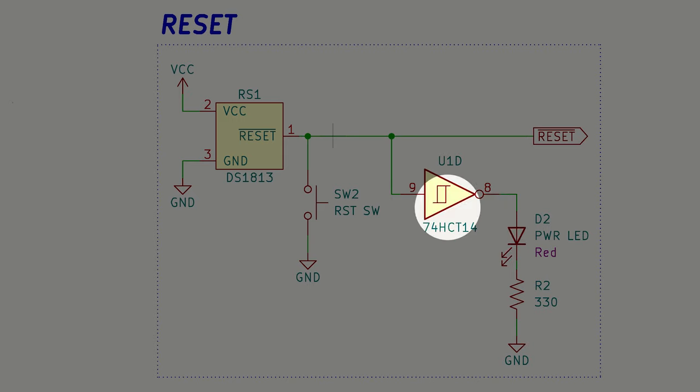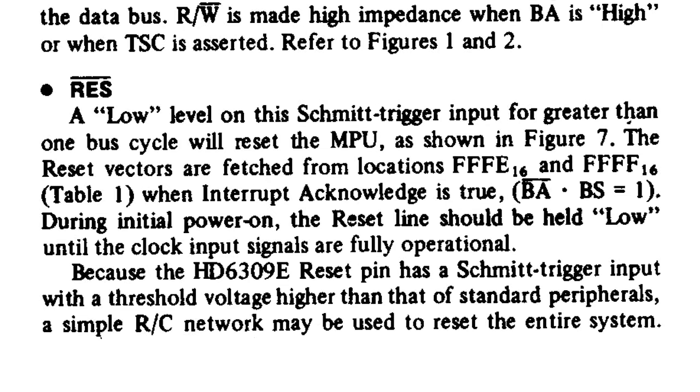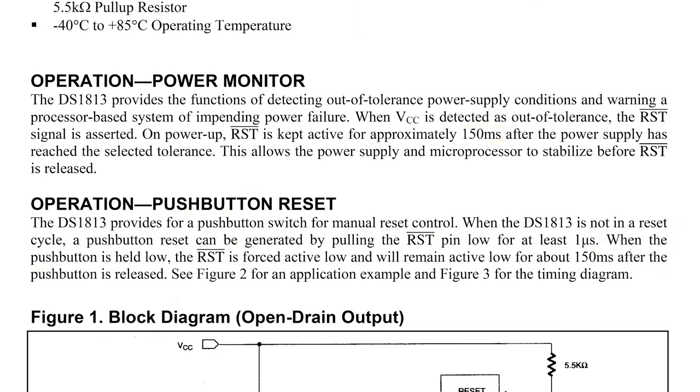Side note, the output of the DS1813 is open-drain, thereby allowing an external device to initiate a reset if needed. According to the datasheet, the 6309 requires the reset line to be held low until both clock signals are fully operational. For our needs, the 150ms reset delay is ample time to allow the clocks to switch.